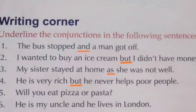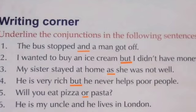Fifth question: Will you eat pizza or pasta? Here we can see a choice or an option, so the conjunction used is 'or' — underline 'or.' Next question: He is my uncle and he lives in London. The word used to join these two sentences is 'and' — underline 'and.'